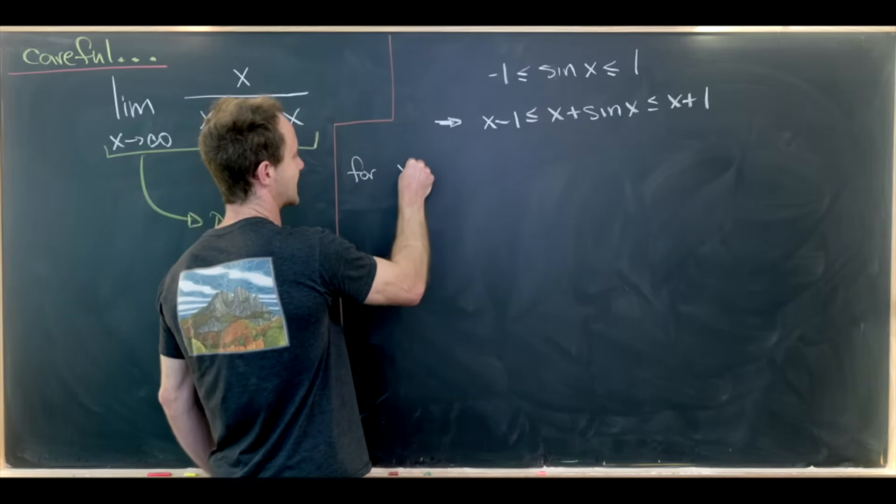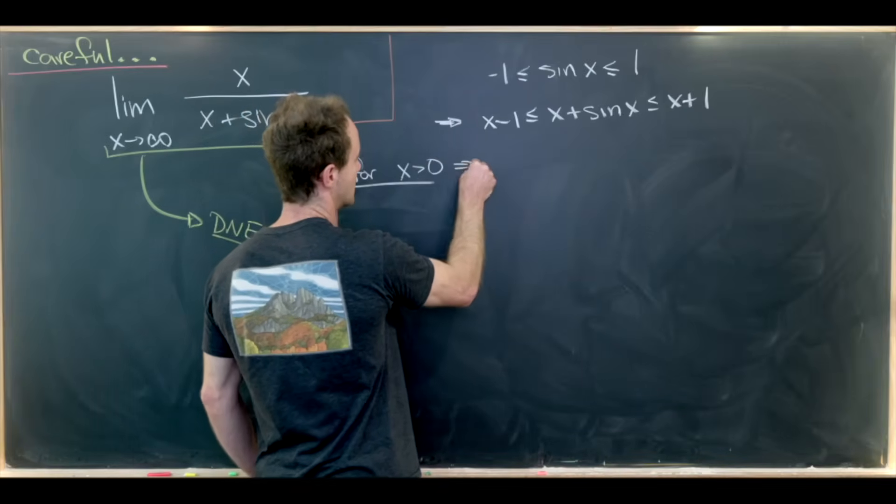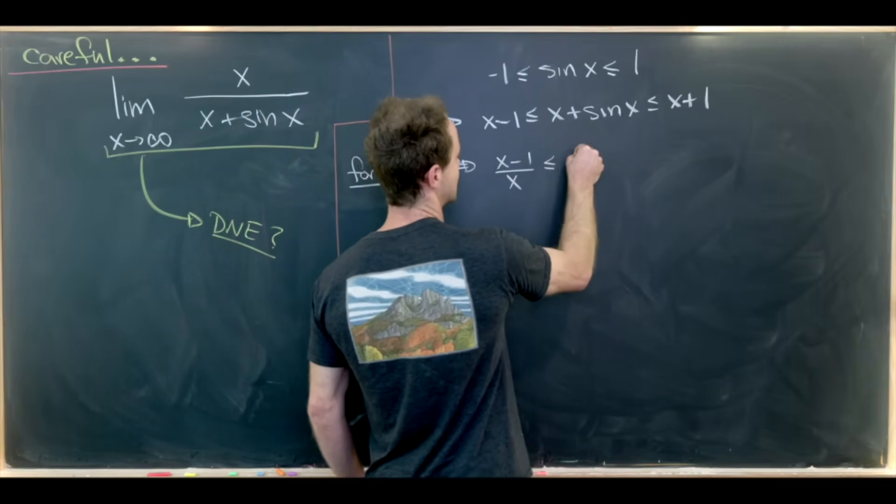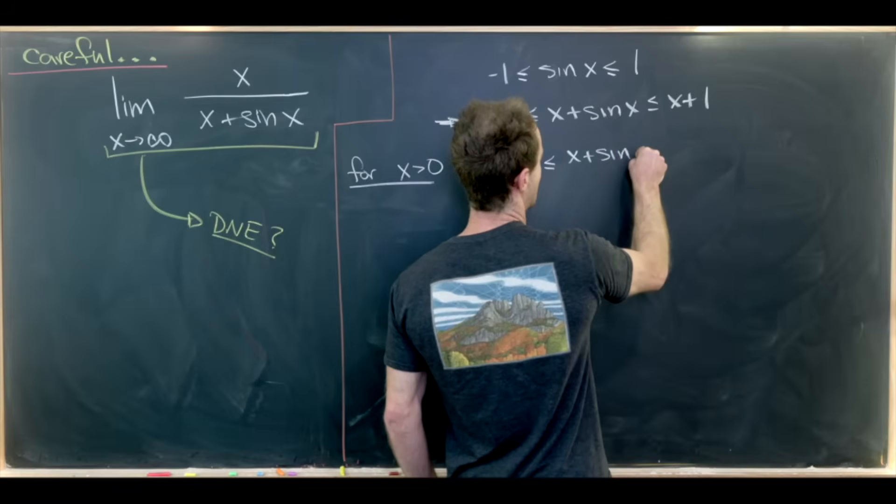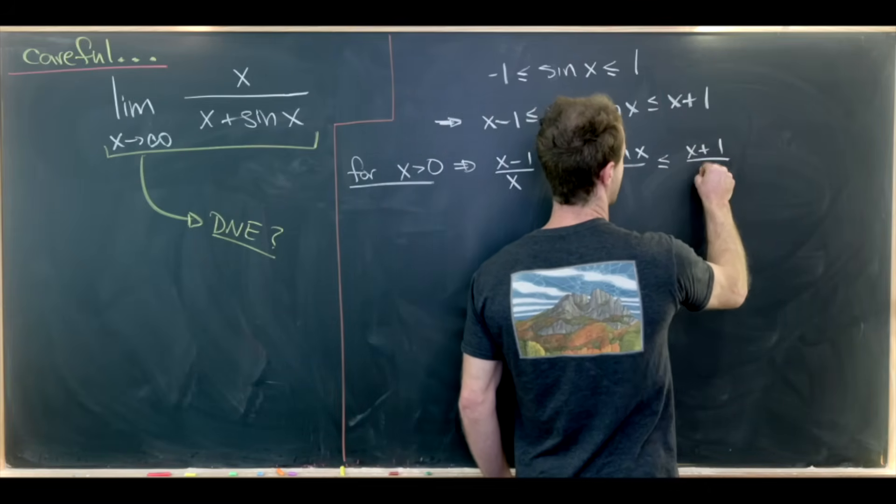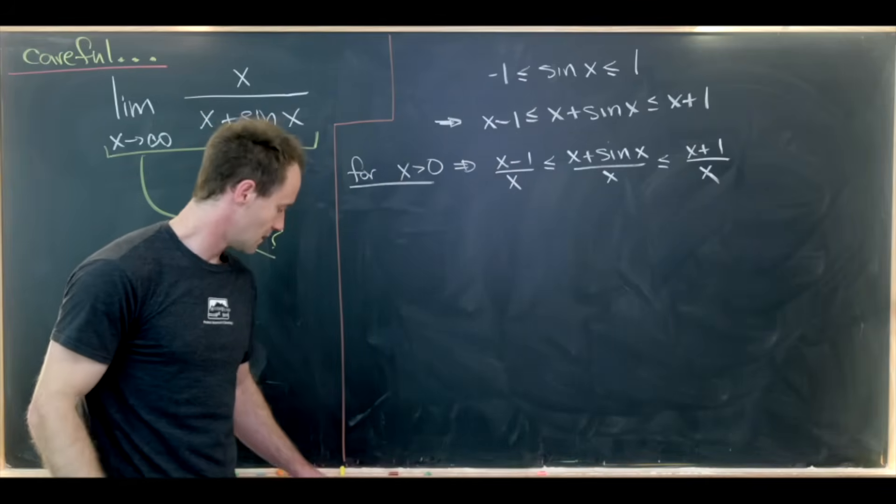So for x bigger than 0 we have (x minus 1) over x is less than or equal to (x plus sine of x) over x, which is less than or equal to (x plus 1) over x.